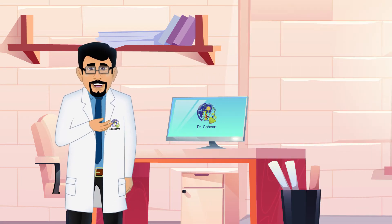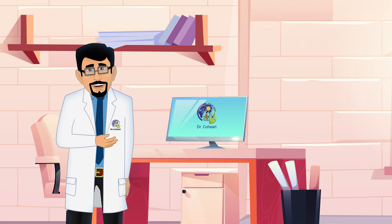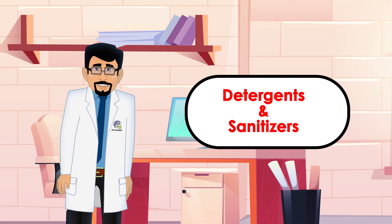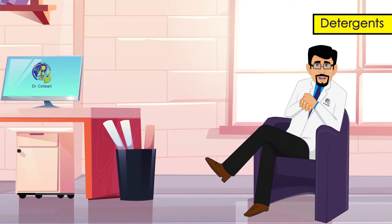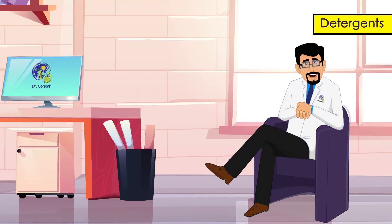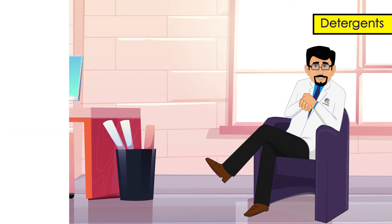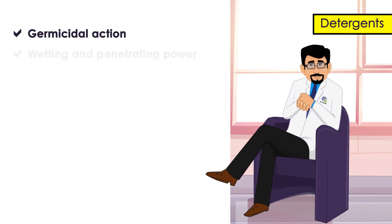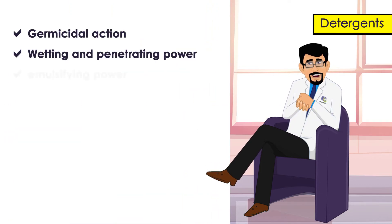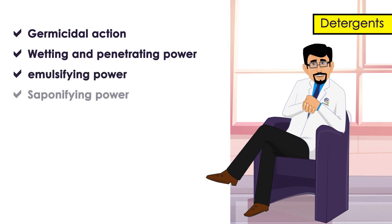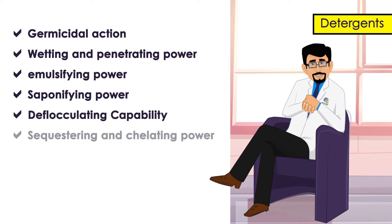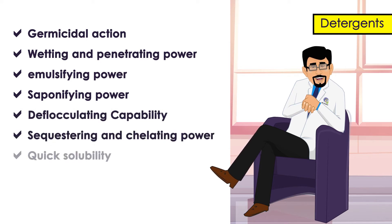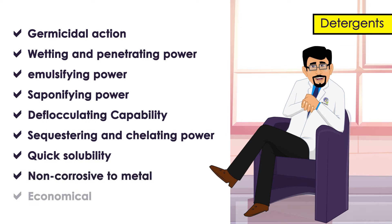The chemicals used for ensuring dairy equipment hygiene mainly includes detergents and sanitizers. Detergents are substances capable of assisting cleaning. The detergents should have germicidal action, wetting and penetrating power, emulsifying power, saponifying power, defloculating capability, sequestering and chelating power, quick solubility, non-corrosiveness to metal surfaces, and should be economical.